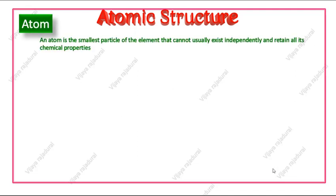An atom is the smallest particle of the element that cannot usually exist independently and retain all its chemical properties. Now we know what is an atom. An atom is the smallest particle of the element.